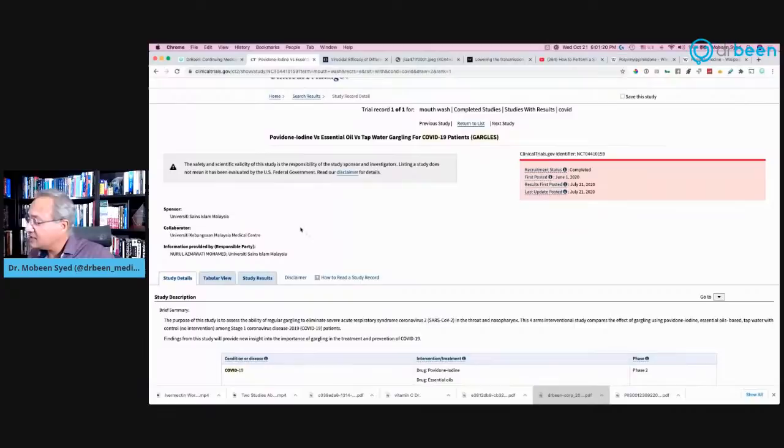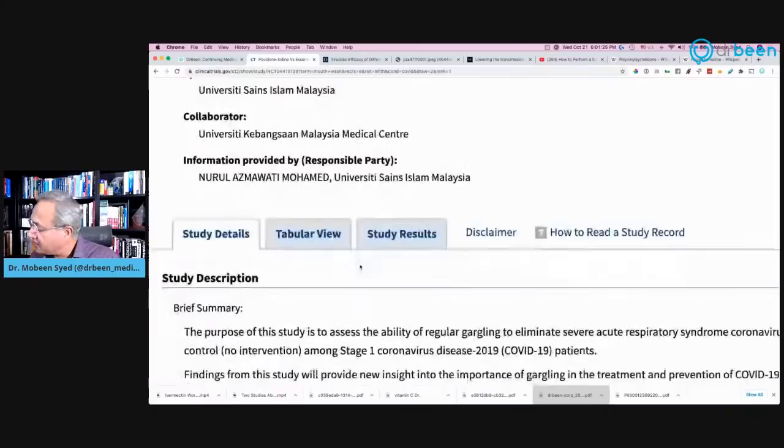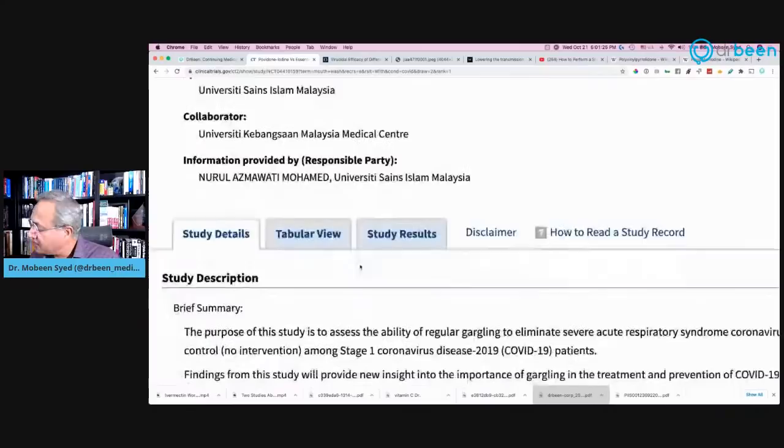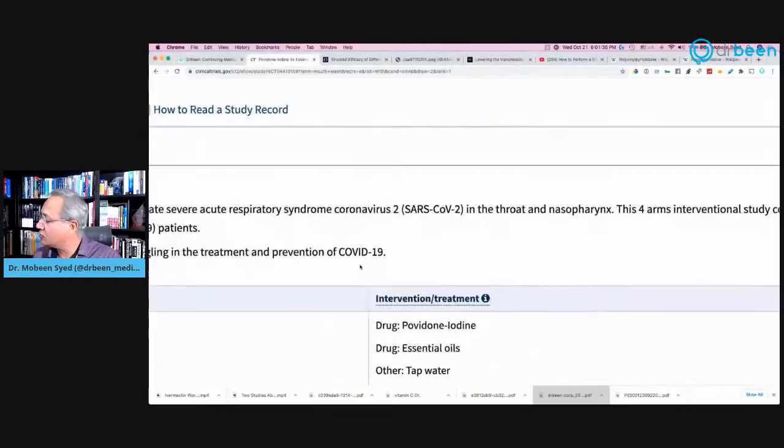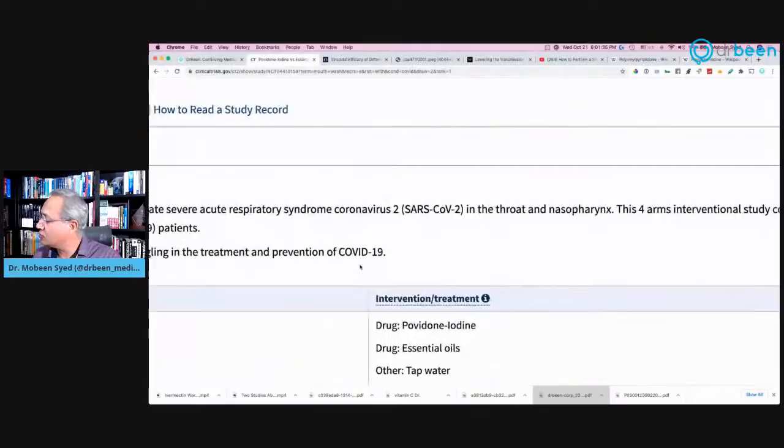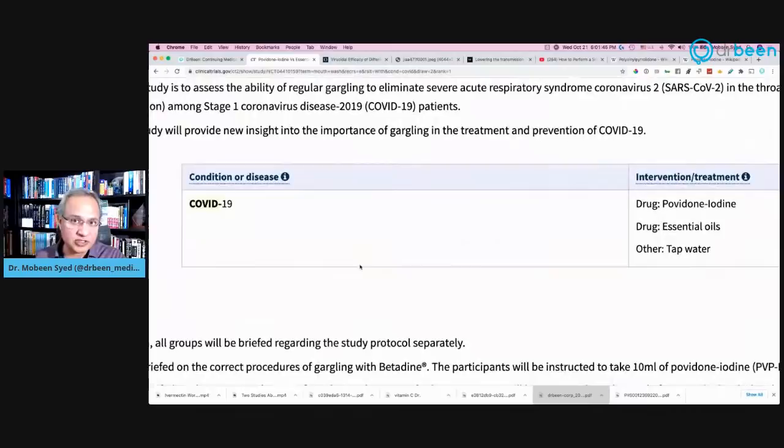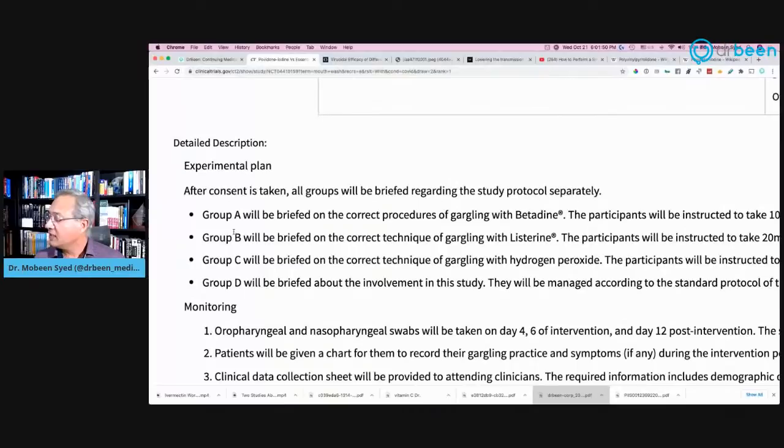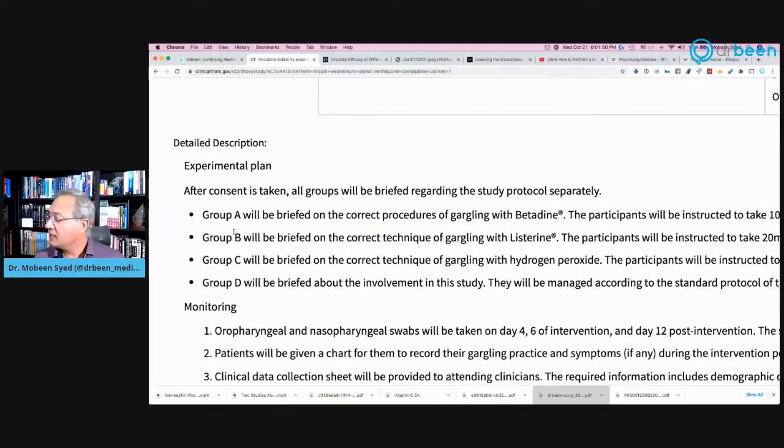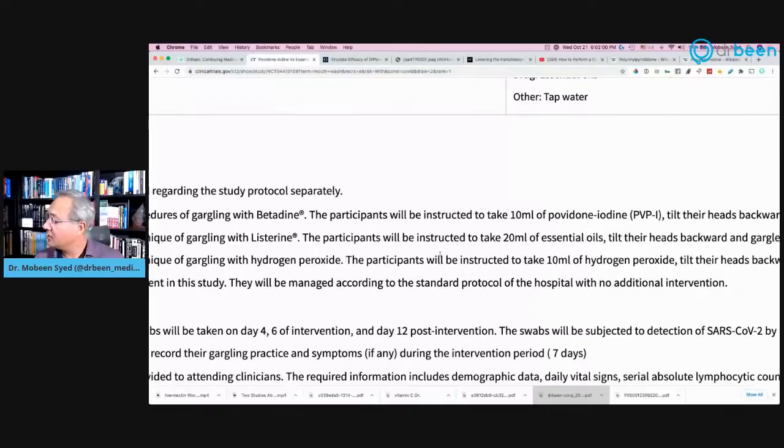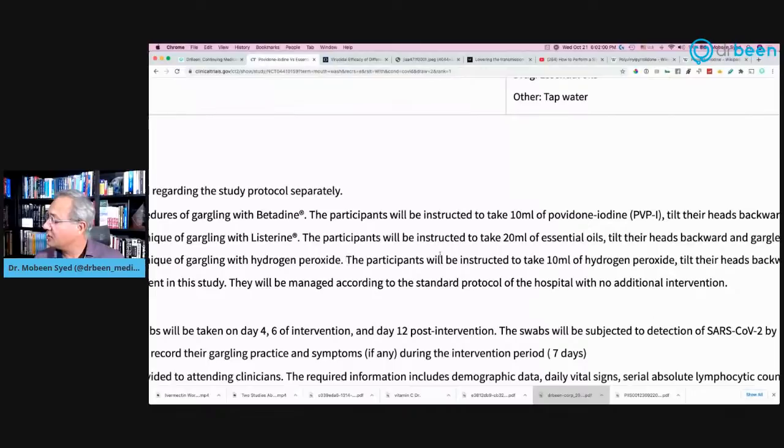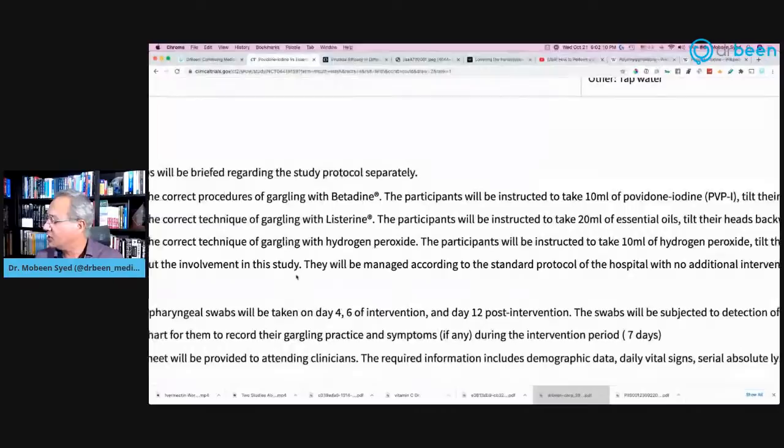So look at this study. This is from Malaysia. And the purpose of the study is to assess the ability of regular gargling to eliminate severe acute respiratory syndrome coronavirus in the throat and nasopharynx. So this is a four-arm study. That means there are four groups of people who were given various mouthwashes. So let's look at the mouthwashes. The first group was given betadine, which is a povidone iodine. The second group was given Listerine, which is Listerine plus essential oils, then hydrogen peroxide, and finally water or nothing.